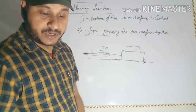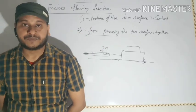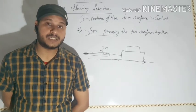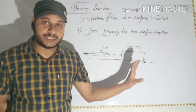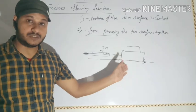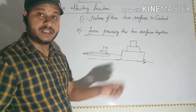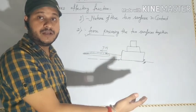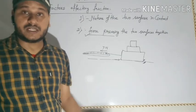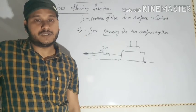From this discussion we can conclude that frictional force — which is a type of contact force — depends on two factors: first, the nature of the surfaces in contact; and second, the force pressing the two objects together. Less pressing force means less frictional force and less effort needed to move the objects. More pressing force means more frictional force and more effort needed.